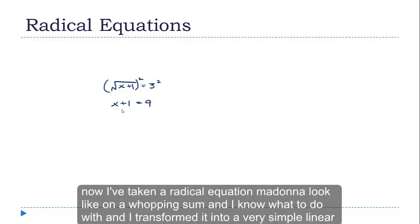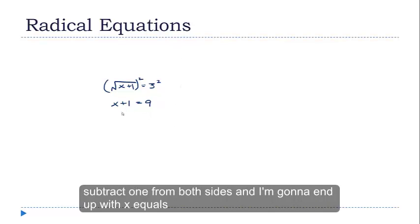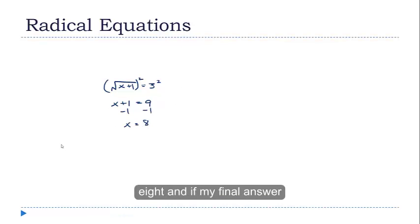I've taken that radical equation and transformed it into a very simple linear equation that I do have methods for solving. So now all I'm going to do is subtract 1 from both sides, and I'm going to end up with x equals 8. And there's my final answer.